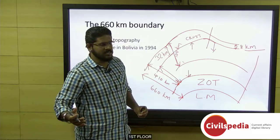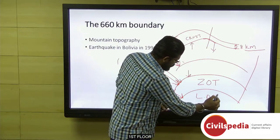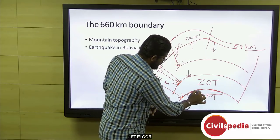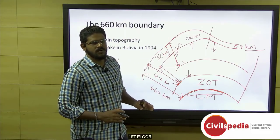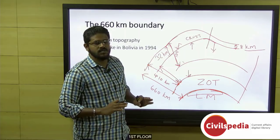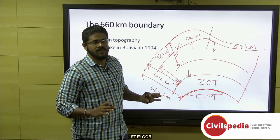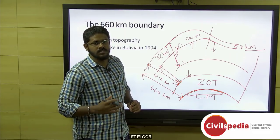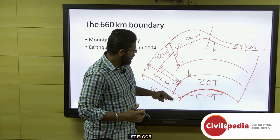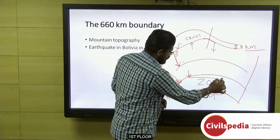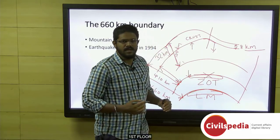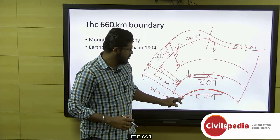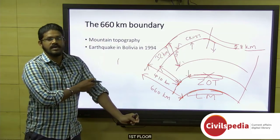Scientists have discovered a new mountain topography at 660 kilometers below the earth's surface — it was not discovered previously. This could throw new light on how the earth itself was formed. They also checked whether such topography exists at the top boundary of the zone of transition but could not find conclusive evidence there. The discovery at 660 kilometers was confirmed based on earthquake wave data.